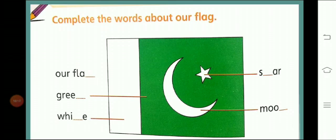Now move to page number 19 and complete the words about our flag. Let's talk about our flag. This is the flag of Pakistan and there are two colors in it — green and white. We can see a crescent, which basically means the moon of the early days. You know the full moon appears after 14 days; in the beginning it looks like a crescent. There is also a star with five pointed edges.